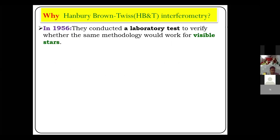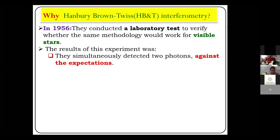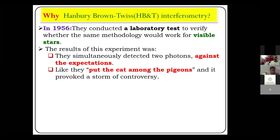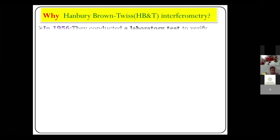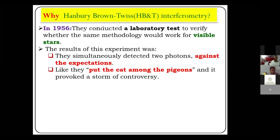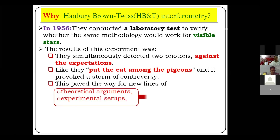A few controversies arose, and out of enthusiasm, Hanbury Brown and Twiss in 1956 conducted a laboratory tabletop experiment to verify whether the same methodology used for radio stars would work for visible stars. The results were astonishing because they challenged classical expectations. It was expected there would be one photon, but they found two photons arriving at the detector simultaneously — in their own words, they had put the cat among the pigeons. This started a storm forging new lines of theoretical reasoning and experimental systems, which ultimately led to the evolution of modern quantum optics.